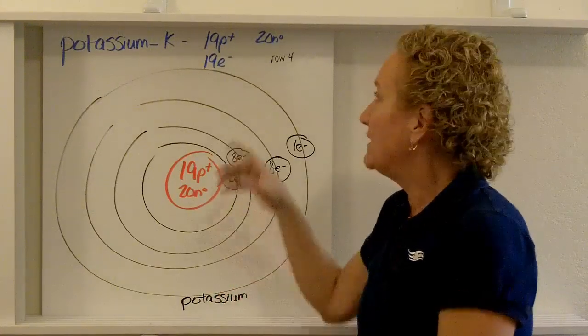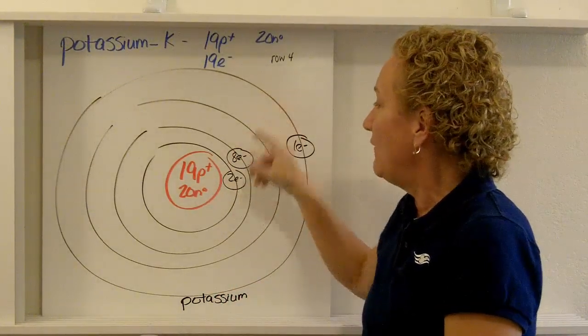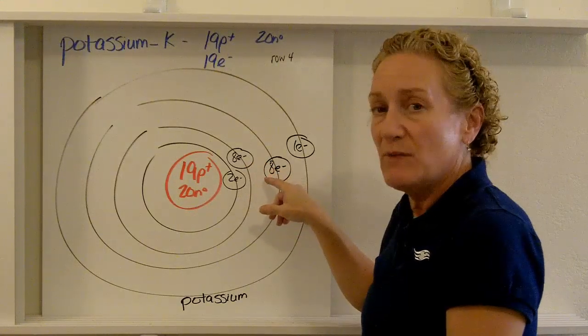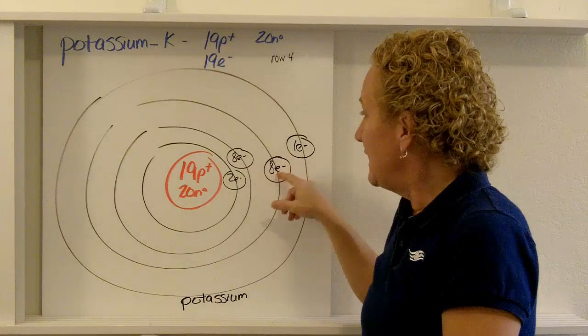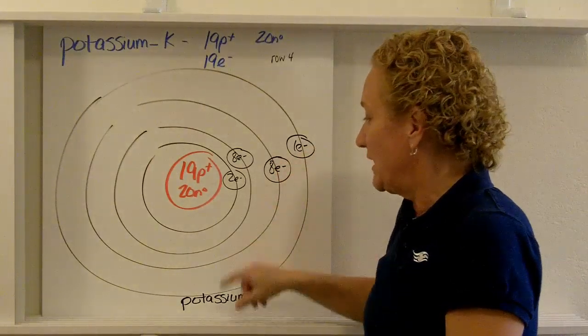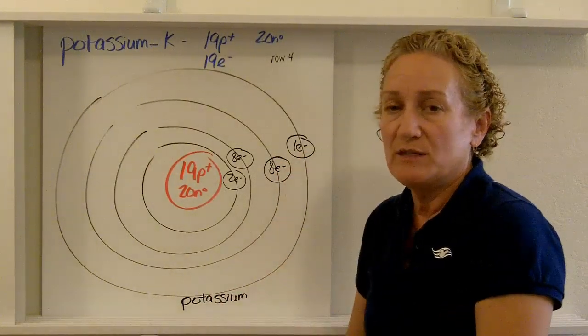Okay? So the way you know that is you're in row four, so you have four, two, eight, 18. But the magic number in chemistry, remember, is eight. And so it's going to take the eight and bump the one up to there. And again, I wrote the name of the element. It's potassium.